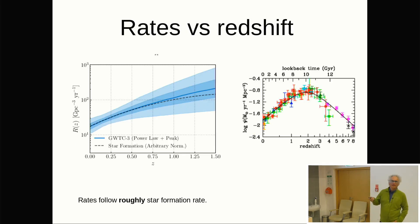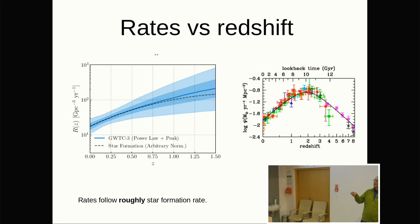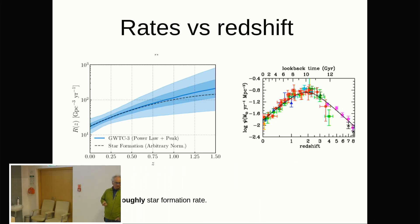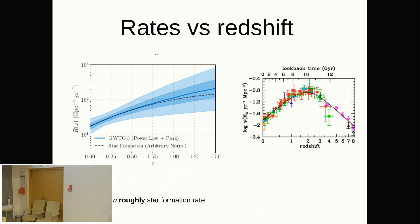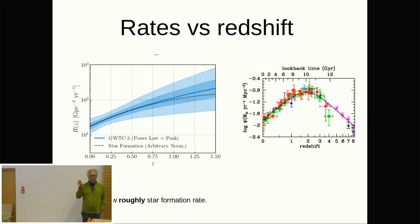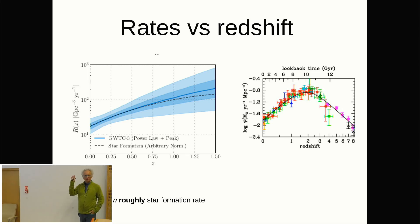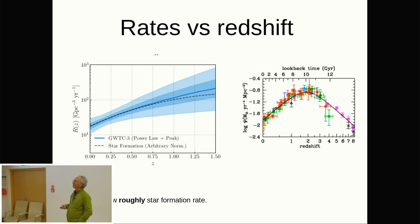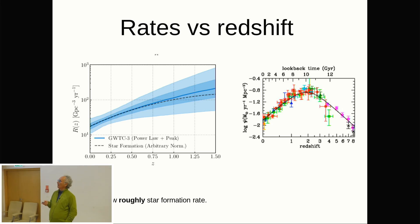To clarify: the rate here is just the number of mergers per gigaparsec-cubed per year — a number count regardless of mass, all masses integrated. The higher rate at higher redshift means there were simply more mergers per unit volume per year in the earlier universe.